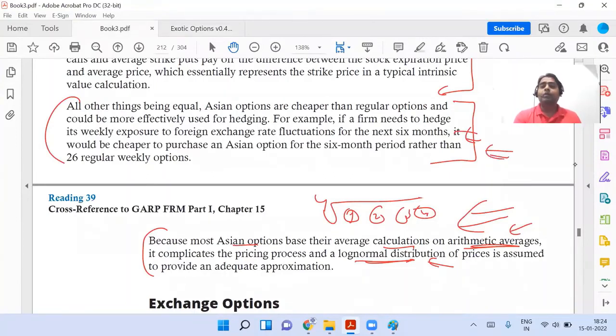So they have just given you an example with respect to that. The example that they have given you is when we talk about Asian option, suppose if I'm taking the Asian option for entire one year, they have taken an example of 26 weeks or basically six months. So instead of, and if somebody is looking out for weekly option, buying weekly option for each week is going to be very costly. As compared to that, you can enter into an Asian option which will take the average price of all the entire six months. That has been highlighted. So that is cheaper as compared to the other options.